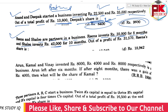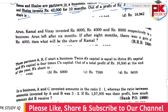Rina and Salu are partners in business. Rina invests Rs. 3,500 for 8 months and Salu invests Rs. 42,300 for 10 months. Out of a profit of Rs. 31,570, find Rina's share. This is an important question worth noting.